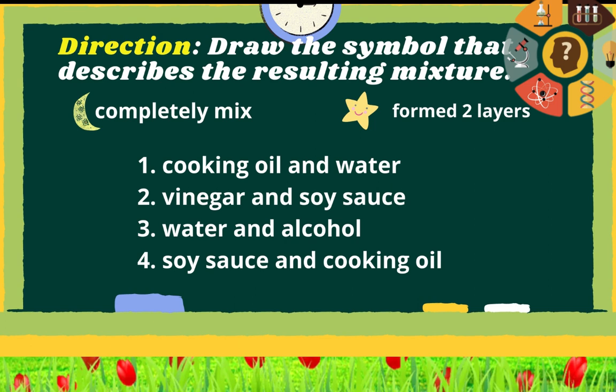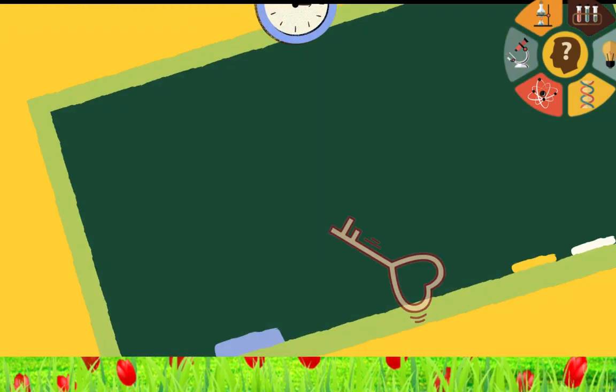Number 1: cooking oil and water. Two: vinegar and soy sauce. Three: water and alcohol. And number 4: soy sauce and cooking oil. Okay, now compare your answers. Do you get all the numbers right?